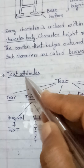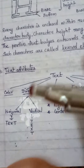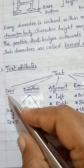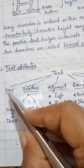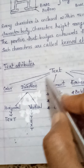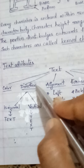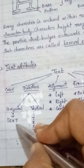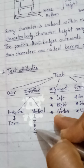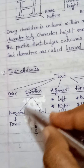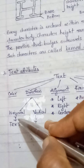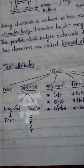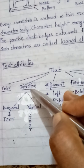Now let us learn about text attributes. The different attributes a text can have are: first, color — text can be displayed in different colors. Second, direction — text can either be displayed in a horizontal direction or in a vertical direction.